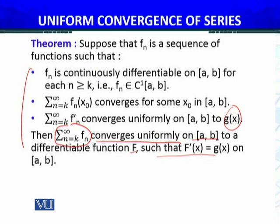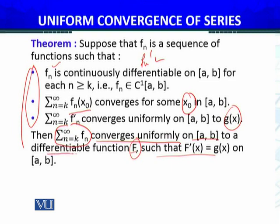Under these conditions, it is true that if the series Σfₙ satisfies the three hypothesis conditions — fₙ continuous, fₙ' continuous, Σfₙ(x₀) converges at only one point x₀, and the series of derivatives Σfₙ' is uniformly convergent — then Σfₙ uniformly converges to some function f, f is differentiable, and its derivative equals g(x). Let's prove this, using the fundamental theorem of calculus and integration from Analysis 1.